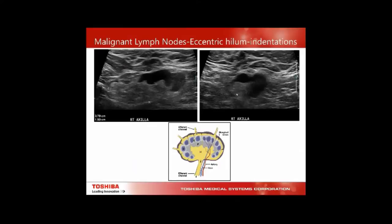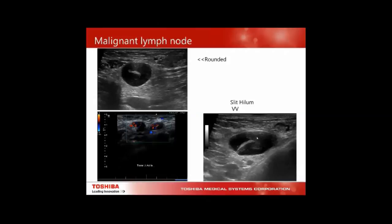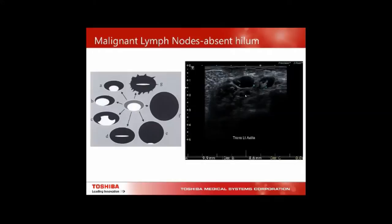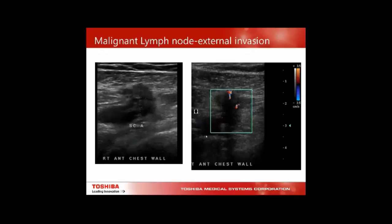Examples of lymph node changes include multiple indentations from cortical invasion, rounded nodes with a slit-like hilum, and absent hilum. With axillary level 2 or 3 involvement, invasion is very close to the subclavian veins — no wonder patients get arm swelling on that side. We've often seen this with recurrence after mastectomy.